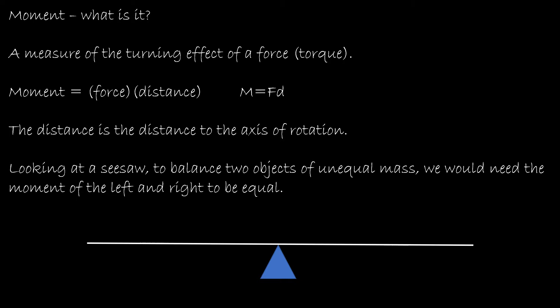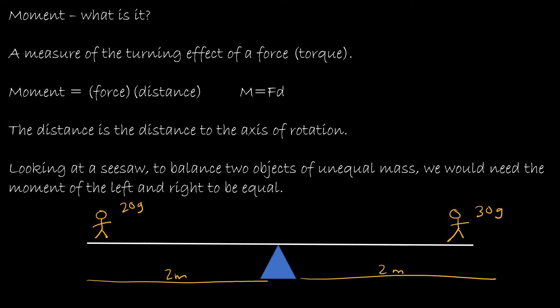The best way to explain this is to think about a seesaw. If you balance two objects of unequal mass, you need the moment on the left and right to be equal. So let's say I have a kid who weighs 20 grams and a kid who weighs 30 grams, and they're both 2 meters from the center. This would be a very boring ride because the 30-gram child weighs more, so one would always be up and one would always be on the ground. If I wanted to balance them on a straight line without their feet on the ground, how could I do that?